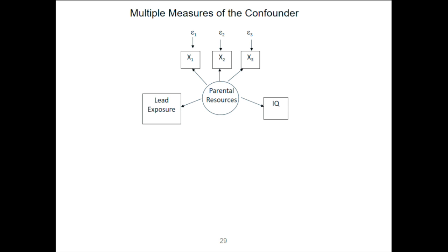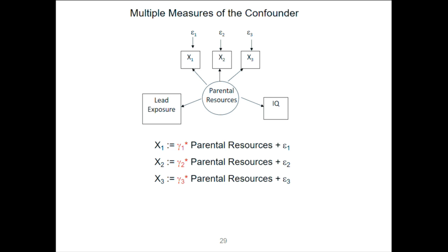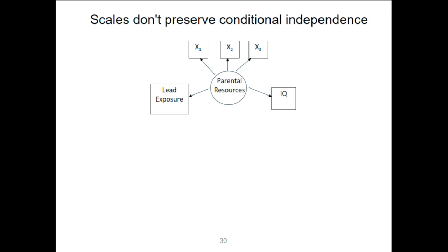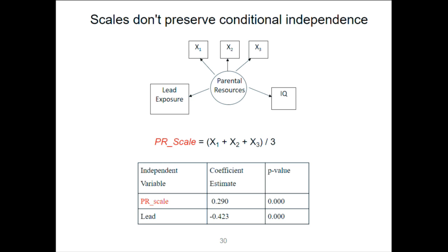But what if I can't measure parental resources at all and I have three indicators X1, X2, and X3? I put together a PR scale — parental resource scale — which is just the sum of the three divided by three. I treat that number as a proxy for parental resources. When I do the same regression, lead is no longer screened off — in fact it comes out highly significant. So it does not work to put together a scale from multiple indicators to screen off lead from IQ. That's a failed strategy, and it has nothing to do with sample size.